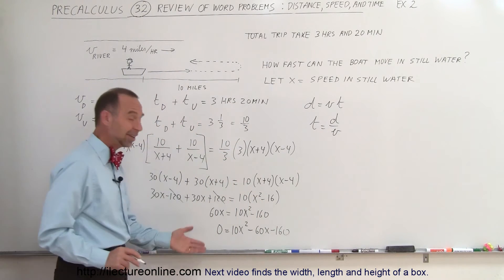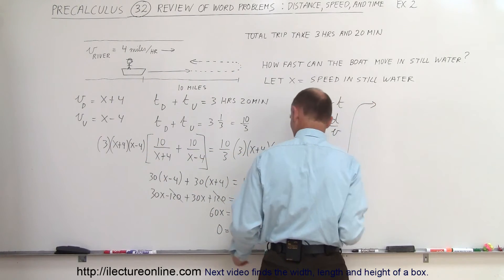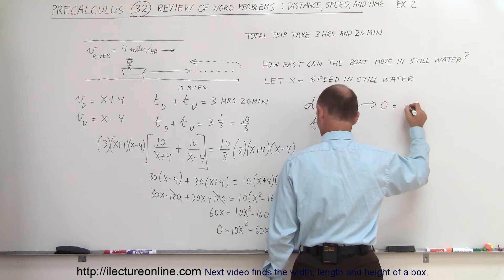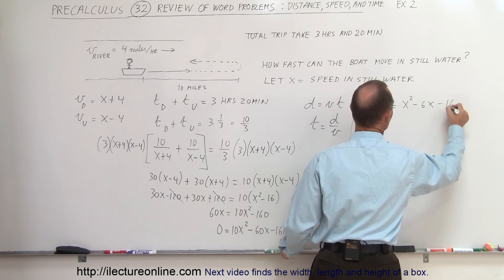And finally, to make things easy, you can see that everything is divisible by 10, so let's move it over here. So we can see that this is zero equals x squared minus 6x minus 16.